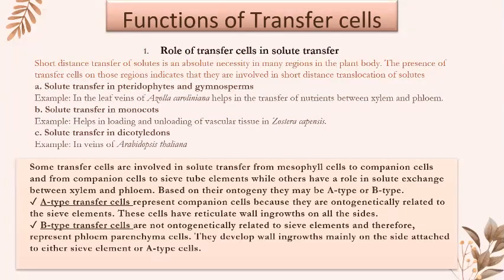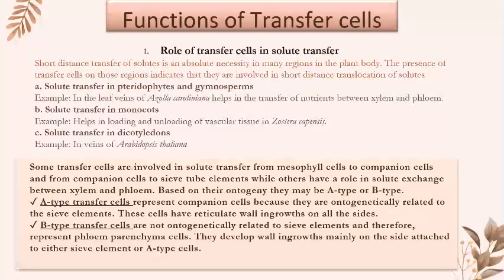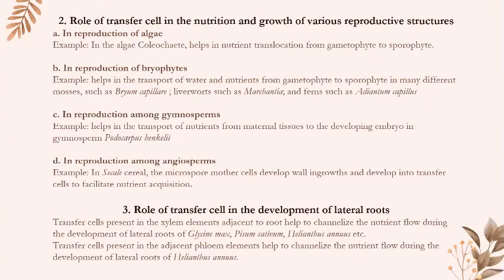Functions of transfer cells: they are involved in short-distance translocation of solutes. Based on their ontogeny, they may be of A-type or B-type. They help in the nutrition and growth of various reproductive structures and in the development of lateral roots.